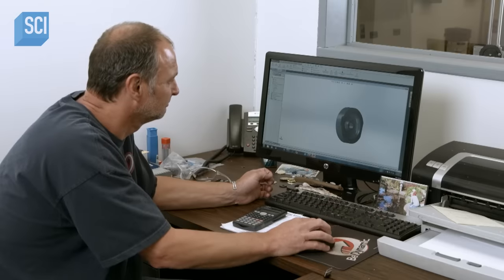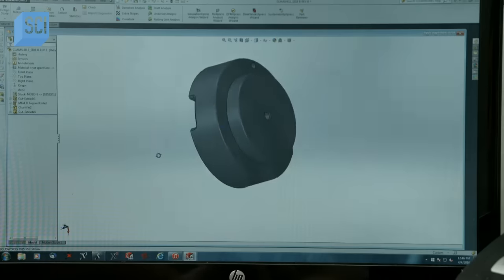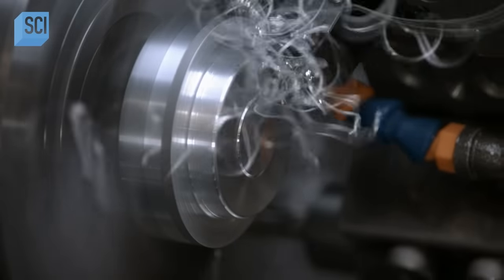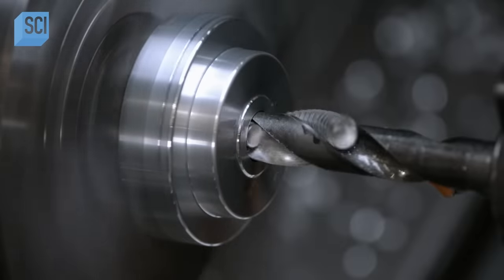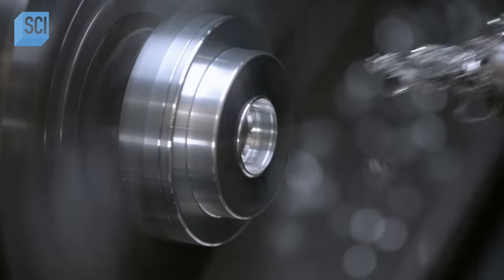Making skateboard wheels starts with a computer design. They'll use the software to guide cutting tools. The tools carve into a solid aluminum puck and transform it into one half of a wheel mold.